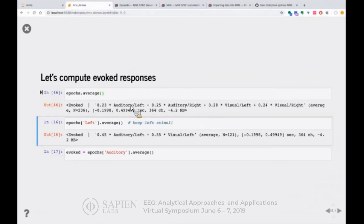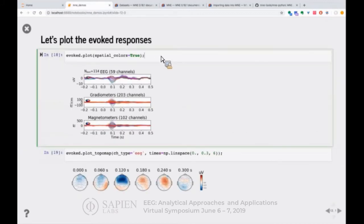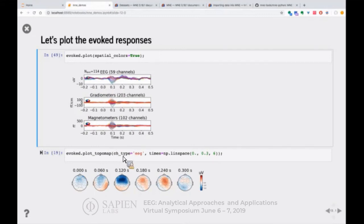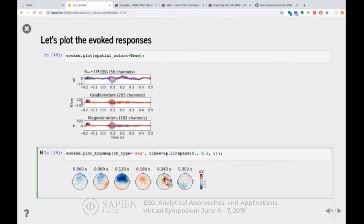Let me move on to show you how to compute evoked responses or event-related fields or event-related potentials if you do EEG. Here I'm going to blindly average all my epochs. This gives me the evoked response where this evoked is a mix of auditory left and everything. There's something quite neat you can do. Since this event ID is coded with a slash, the slash separates between tags. I can say epochs square bracket left, and this will take all the epochs that correspond to a left tag. So auditory left will survive and visual left will survive. I'm going to do the same thing for auditory, taking all the auditory responses whether they are left or right.